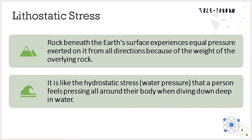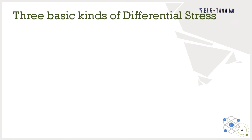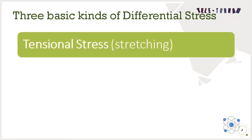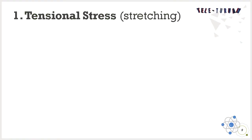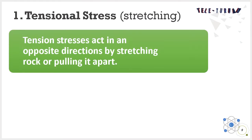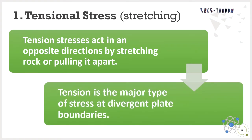Differential stress, on the other hand, is also called deviatoric stress. In many cases, rock may experience an additional and unequal stress due to tectonic forces. There are three basic kinds of differential stress. We have tensional stress, compressional stress, and shearing stress. Tensional stress, or stretching: tension stresses act in opposite directions by stretching rock or pulling it apart. Tension is the major type of stress at divergent plate boundaries.